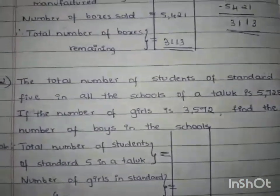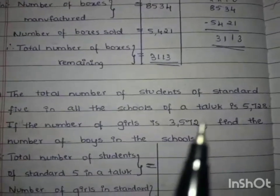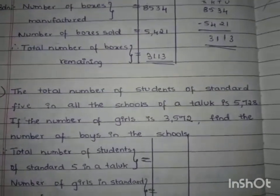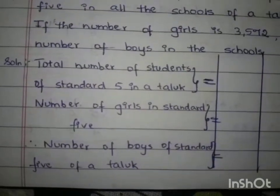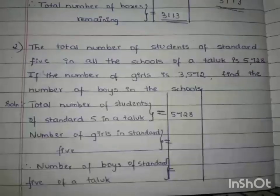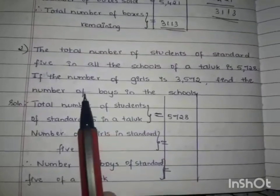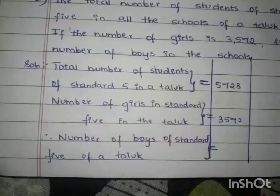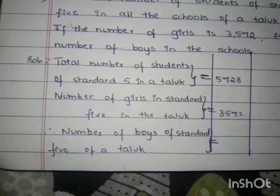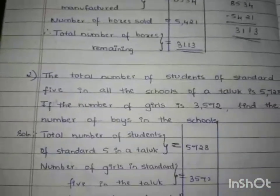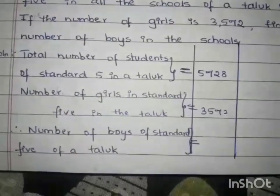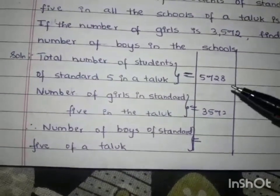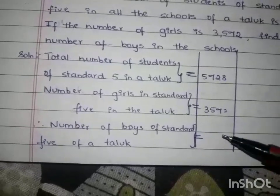We will write down the statements. The total number of students in 5th standard in a Taluk is 5,728. The number of girls in standard 5 in the Taluk is 3,572. We have to find the number of boys in the school. Therefore, the number of boys of standard 5 in a Taluk will be calculated by subtracting the two given numbers.